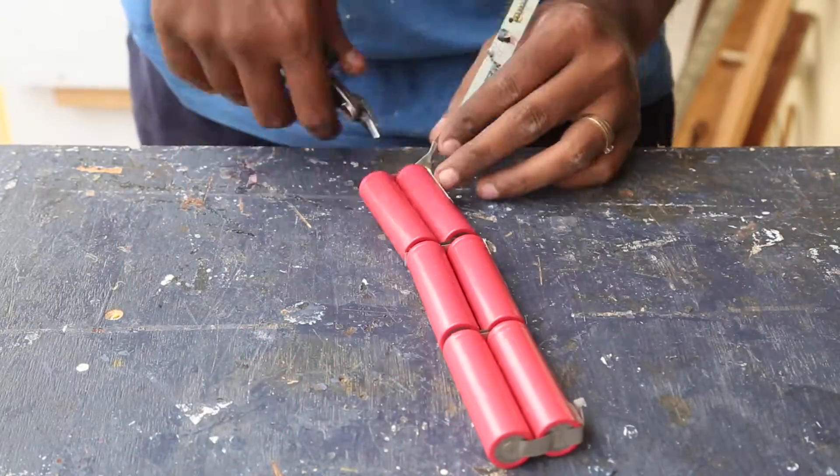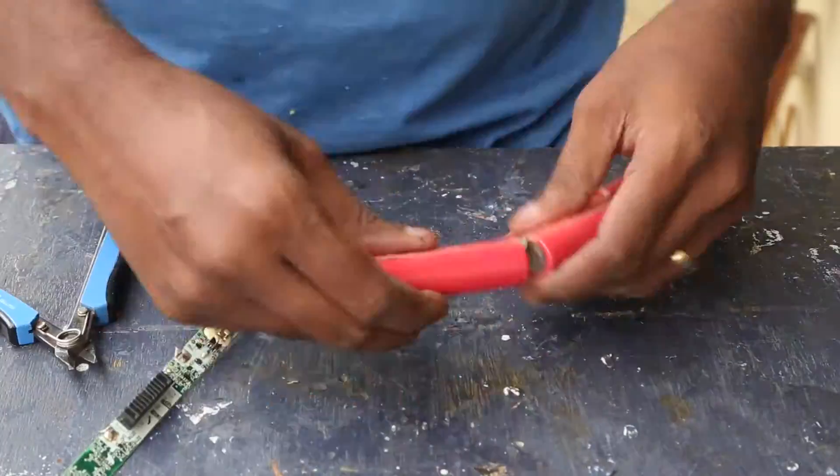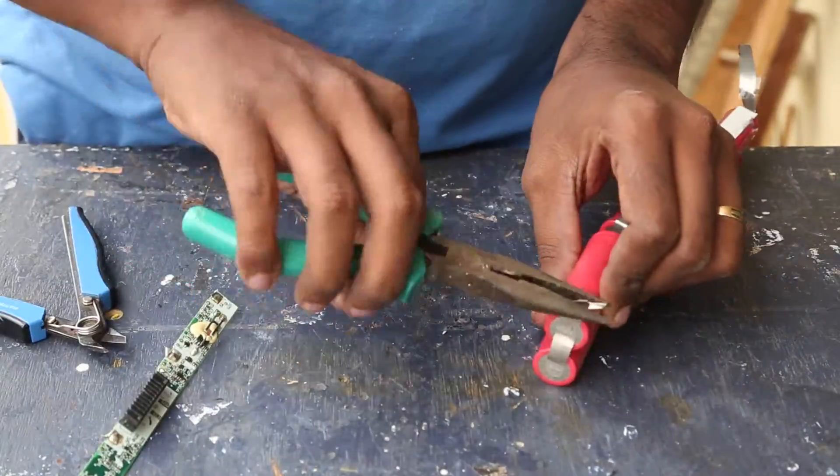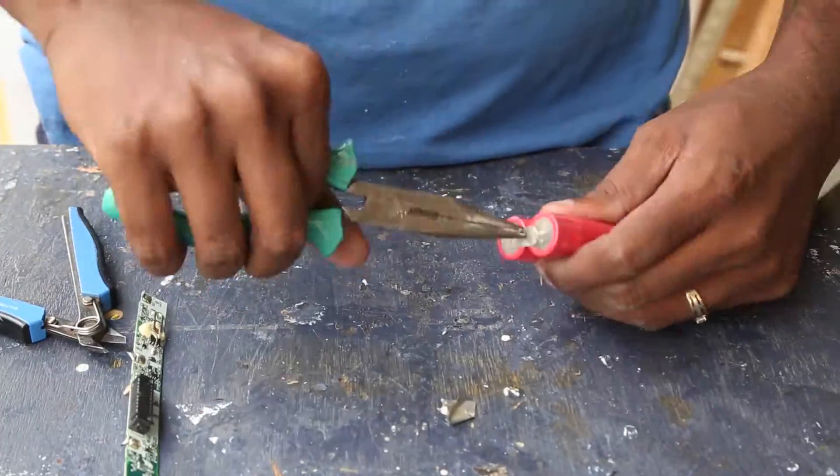This is the charging circuit. We will be using our own circuit so we don't need this one. There are no parts to salvage too, so I'm just cutting it off using pliers.